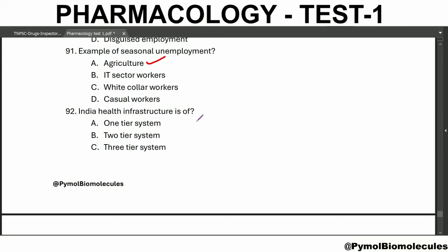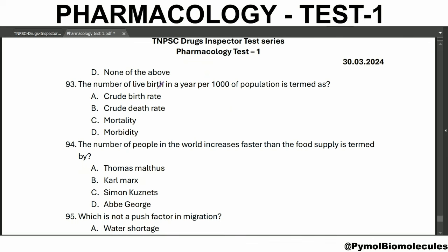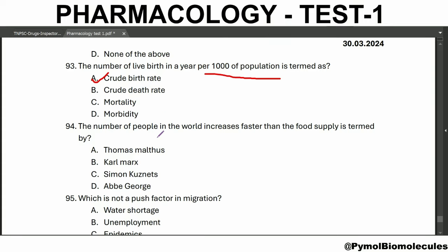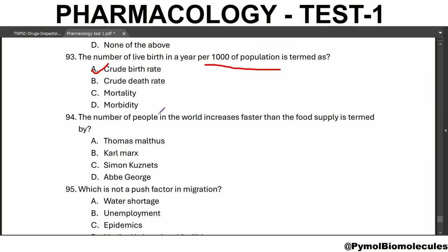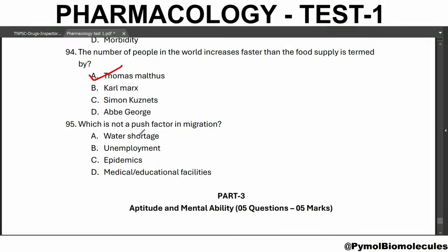Producing more goods without generating employment is termed jobless growth. An example of seasonal unemployment is agriculture. India's health infrastructure is a three-tier system: primary, secondary, and tertiary. The number of live births in a year per thousand population is termed the crude birth rate. The idea that the number of people in the world increases faster than the food supply was stated by Thomas Malthus. Medical or educational facilities are not a push factor in migration.